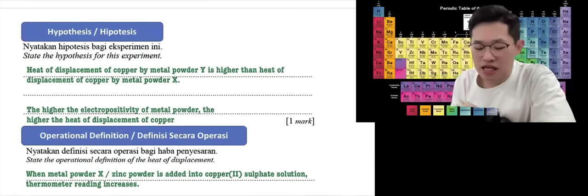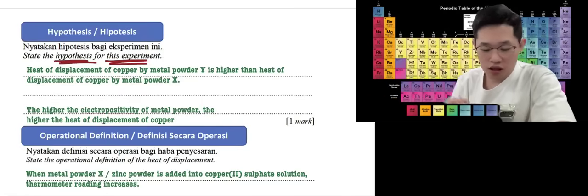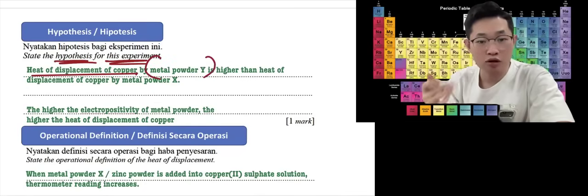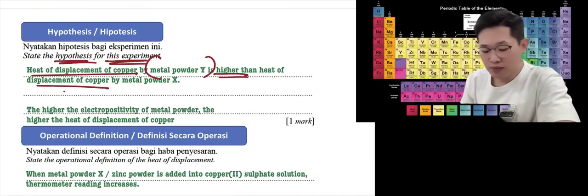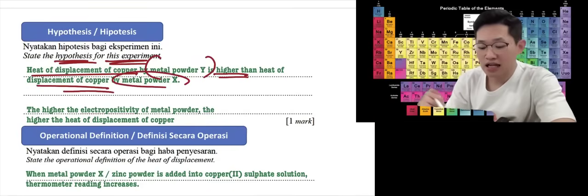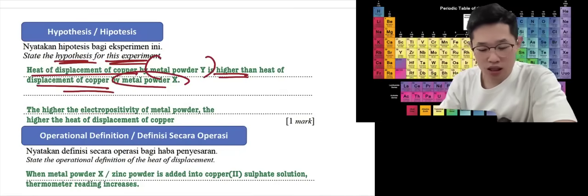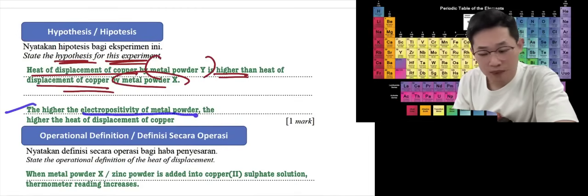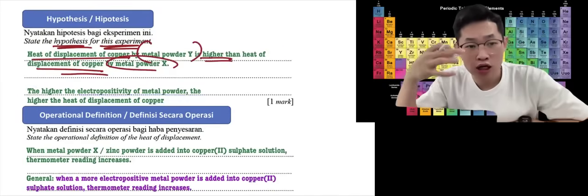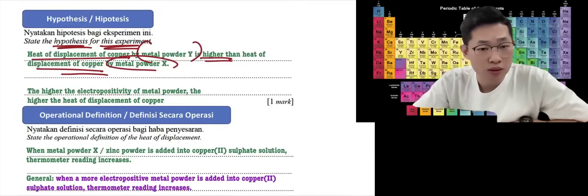For the hypothesis, you need to make a comparison. For example: the heat of displacement of copper by metal powder Y is higher than the heat of displacement of copper by metal powder X. Alternatively, a general hypothesis would be: the higher the electropositivity of the metal powder, the higher the heat of displacement of copper. Both are acceptable.